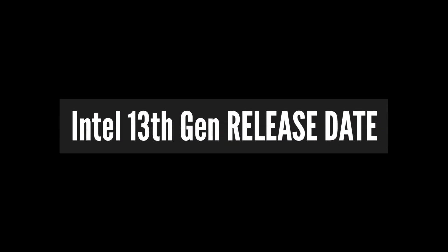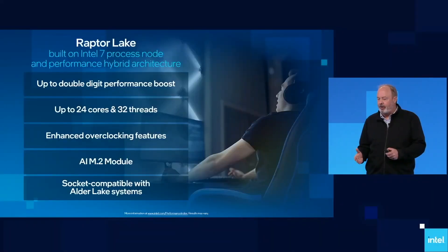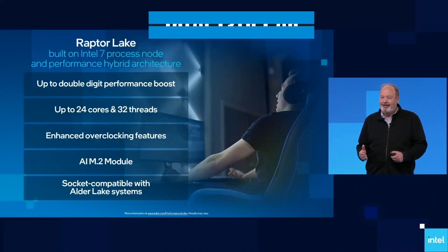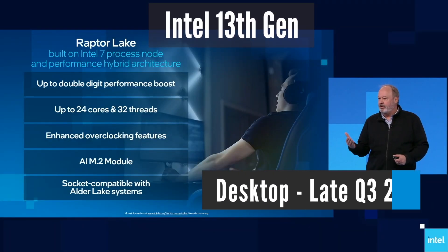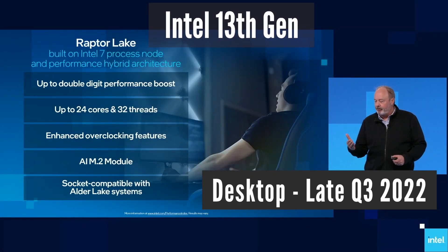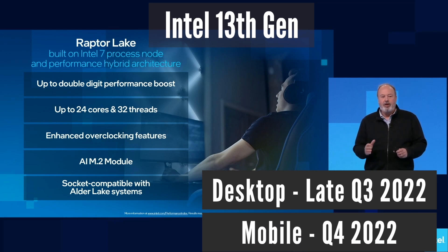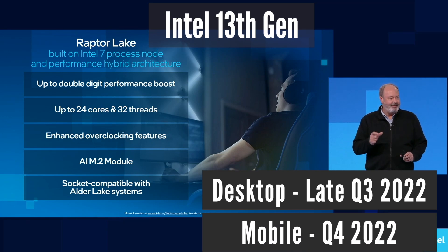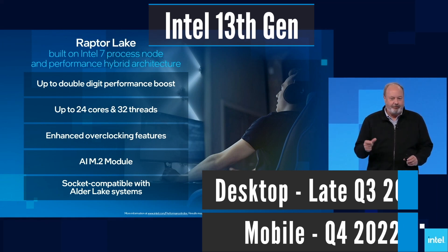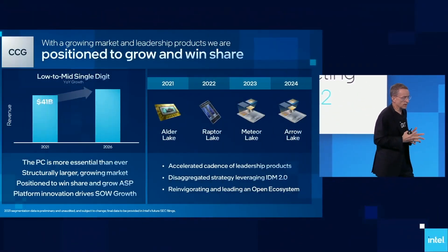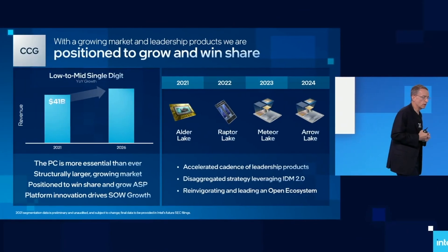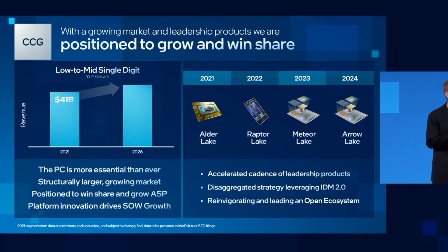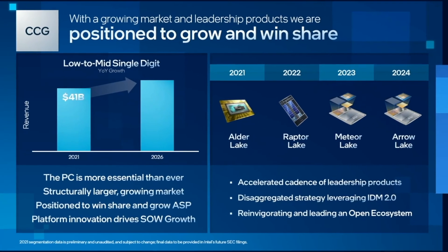That brings us to the release date of Intel 13th gen CPUs. According to the latest leaks, we should expect the launch to happen in late Q3 this year, with mobile processors launching in Q4. Lately, it takes Intel less than a year to release a new generation — looks like they are working hard to regain CPU performance superiority. Competition is always good to have.